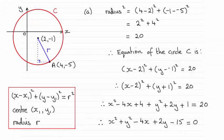Hi there. Now for this question we were given a circle C with centre coordinates (2, -1) and a point on the circumference A with coordinates (4, -5). And we had to find the equation of the circle, or should I say an equation for the circle.